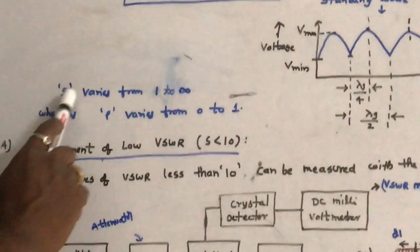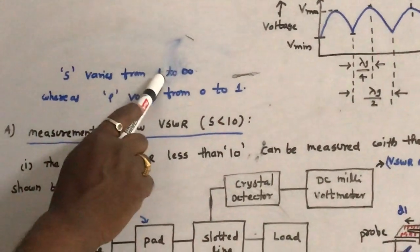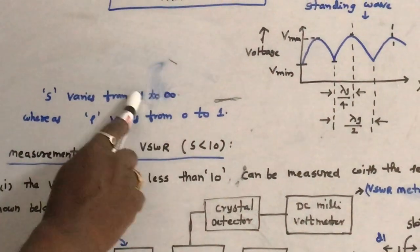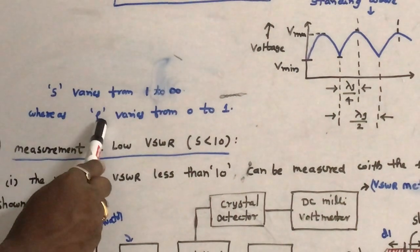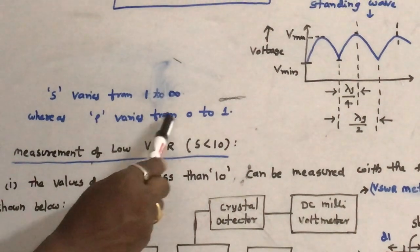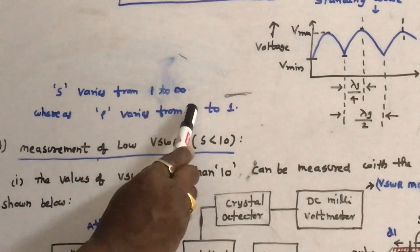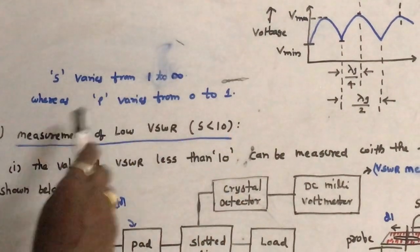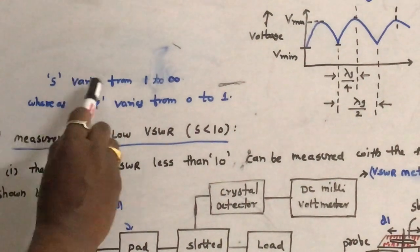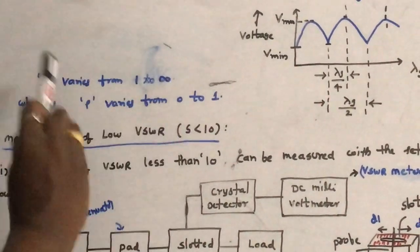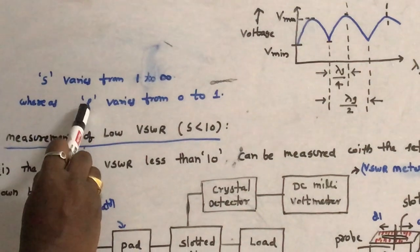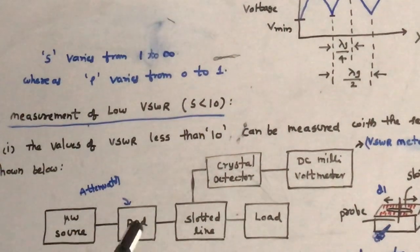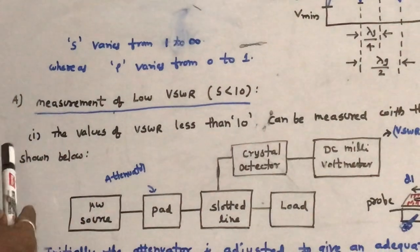The standing wave ratio varies from 1 to infinity — this is the range of VSWR. The reflection coefficient varies from 0 to 1 — this is the range of the reflection coefficient. These are very important short answer questions.